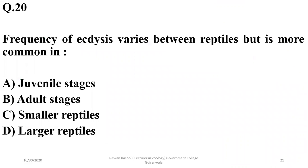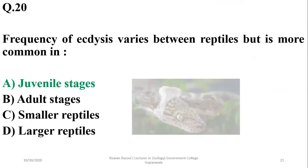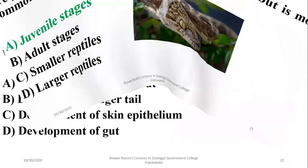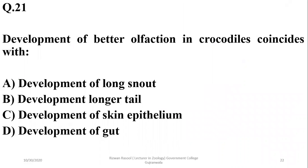Question nineteen: the frequency of ecdysis — shedding of the outer porous skin — varies among reptiles but is more common in juvenile stages. The correct option is alpha. The development of the olfactory bulb in crocodiles coincides with the development of their longer snout, giving them a well-developed sense of smell compared to other reptiles.